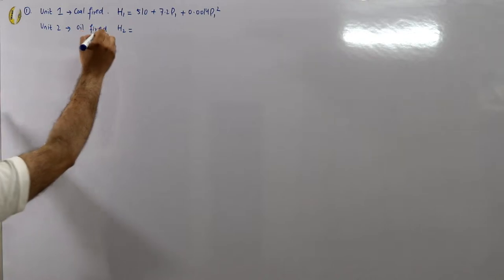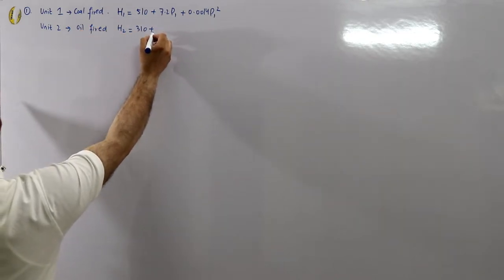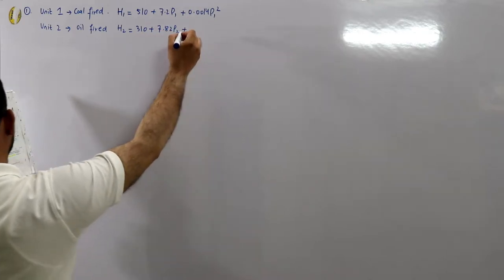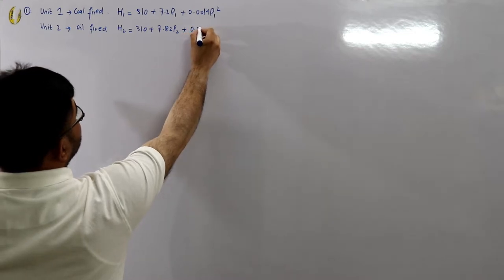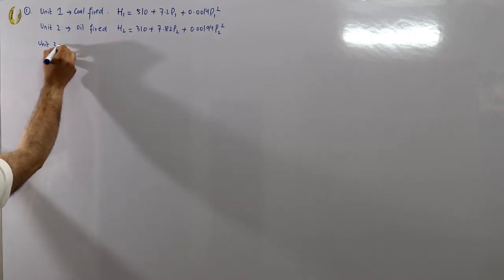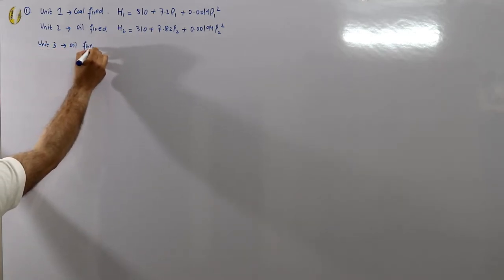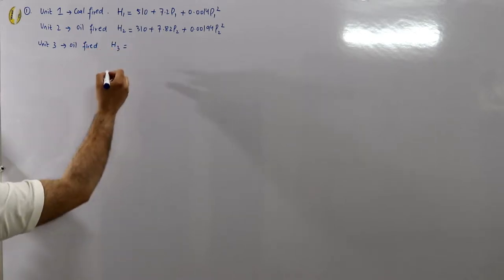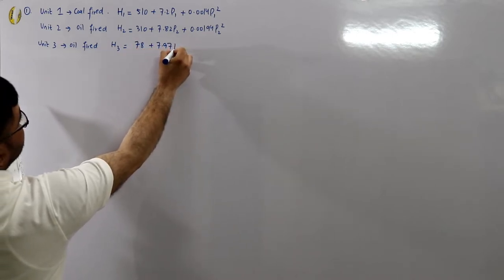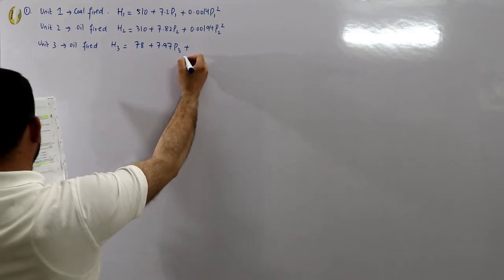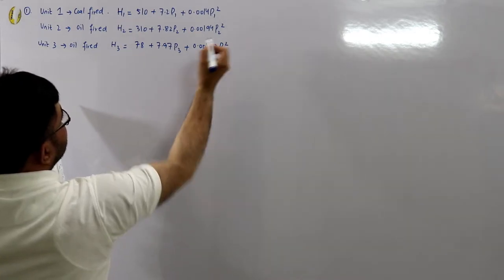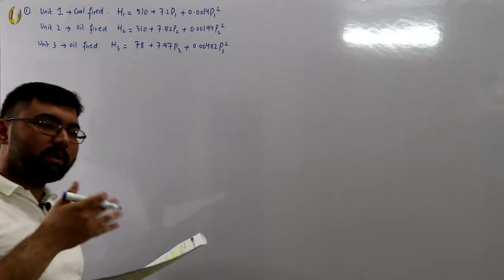Unit number two is an oil-fired steam station with cost model h2 = 310 + 7.82·p2 + 0.00194·p2². Unit number three is also an oil-fired station with cost model h3 = 78 + 7.97·p3 + 0.00482·p3².